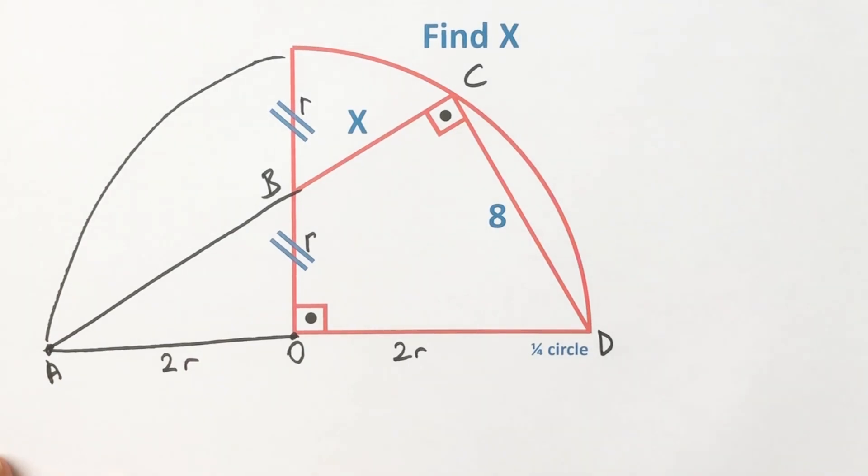Now for this triangle, applying the Pythagorean theorem: R² + (2R)² = AB². So R² + 4R² = AB², which gives 5R² = AB². Taking the square root of both sides, AB = R√5.